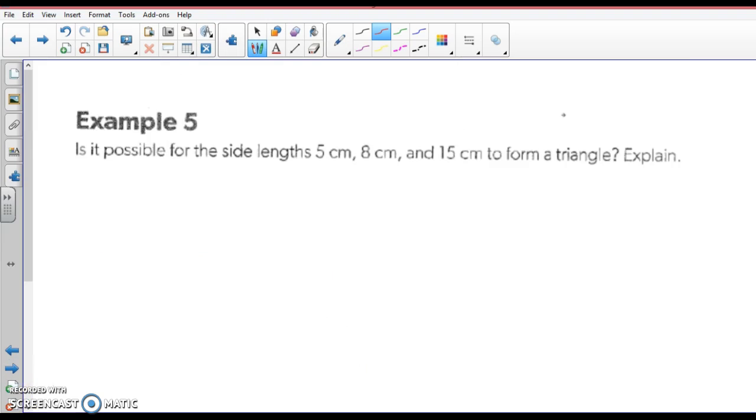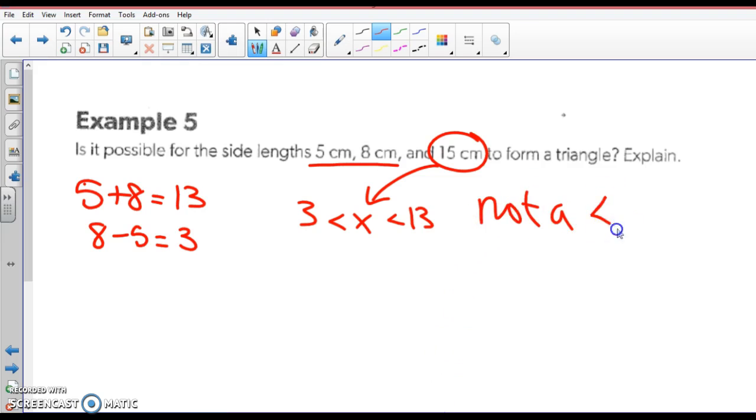Alright, is it possible for the side lengths 5, 8, and 15 to form a triangle? Take the first two. Add them. 5 plus 8 is 13. And 8 minus 5 is 3. So our third side X has to be greater than 3 and less than 13. Is 15 inside this length? No, it's not. It's impossible. You can't have a triangle that has sides 5, 8, and 15. It's not physically possible. Not a triangle.